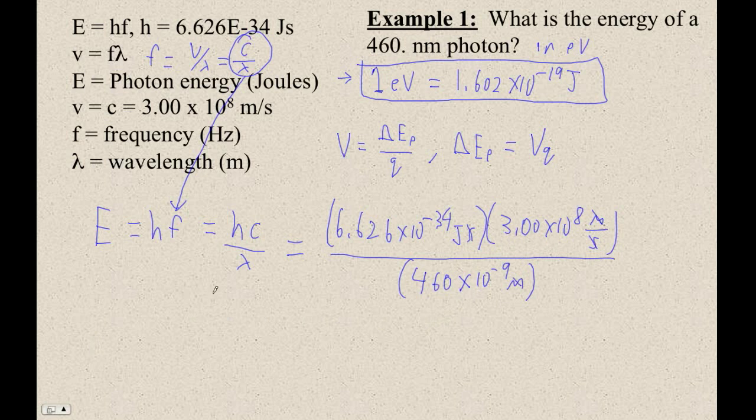6.626 E minus 34 times 3E8 divided by 460 E minus 9. And that is, the energy is equal to 4.3213 times 10 to the minus 19th joules.